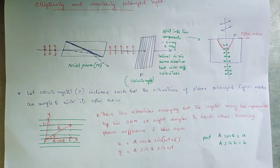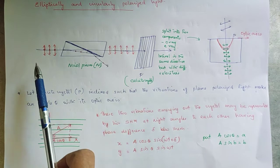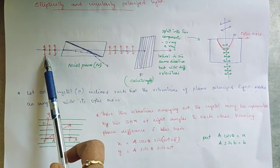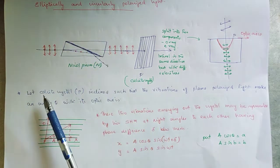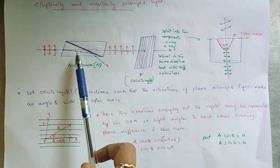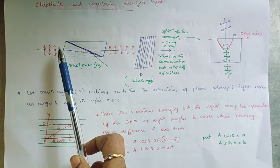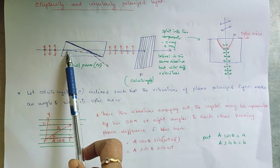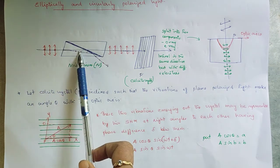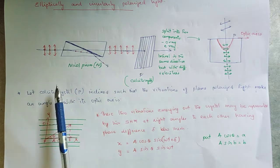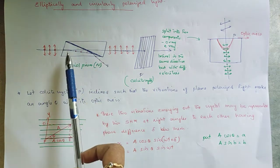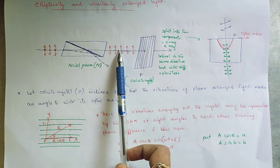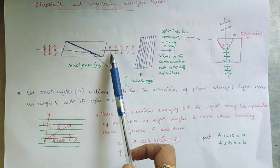In this lesson, we discuss elliptically and circularly polarized light. A monochromatic or unpolarized light is incident on the Nicol prism. By the principles of the Nicol prism, unpolarized light is split into two components: one is the ordinary ray and another is the extraordinary ray. When the angle of incidence is greater than the critical angle, the ordinary ray is totally internally reflected, and only the extraordinary ray emerges, which is plane polarized light.